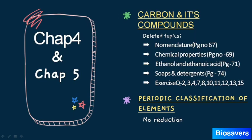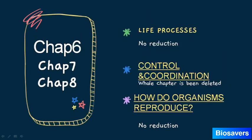For Chapter 5 — Periodic Classification of Elements — there is no reduction; we have to refer the whole chapter. Moving to the Biology portion, Chapter 6 — Life Processes — also has no reduction in the chapter.